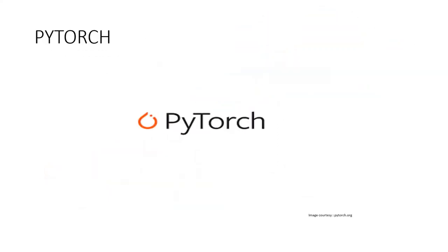PyTorch is an open-source machine learning library based on the Torch library, used for applications such as computer vision and natural language processing. PyTorch and TensorFlow are two of the most commonly used Python libraries for deep learning. PyTorch is developed by Facebook while TensorFlow is a Google project. In this video, you will see how the PyTorch library can be used to solve classification problems.